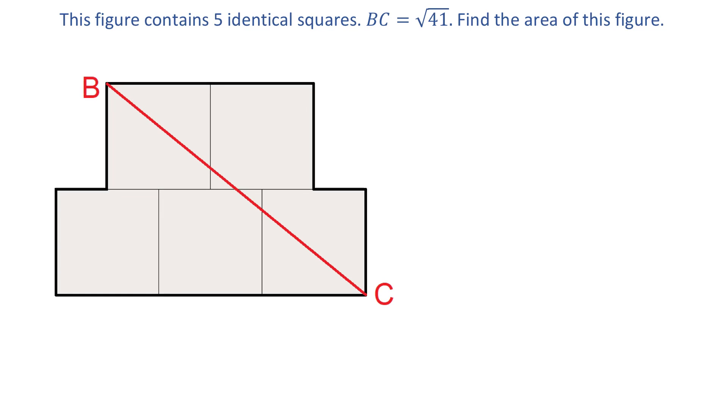This figure contains five identical squares and the distance from point B to point C is square root of 41 units. The two top squares are centered so that the midpoint of their bottom sides coincide with the vertices of these three squares.